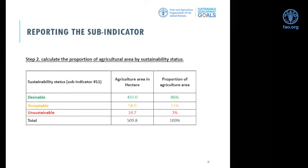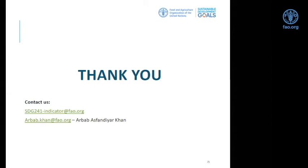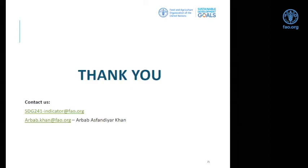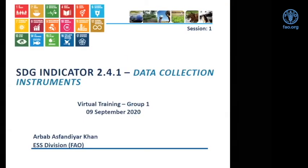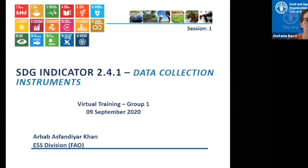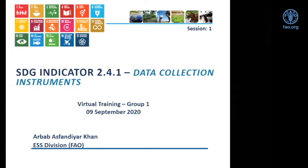The last step remains the same: calculate proportions by green, yellow, and red by aggregating the agricultural area of the respective holdings. With this, I come to the end of the presentation covering the 11 sub-indicators of 2.4.1. The next step was to develop tools and processes for data collection. So not only FAO collecting final indicator values from countries, but country-level data collection. In this respect, we started working on the indicator methodology and translating it into a survey questionnaire or module, along with documents that facilitate data collection at the country level.